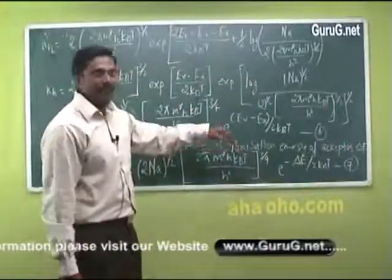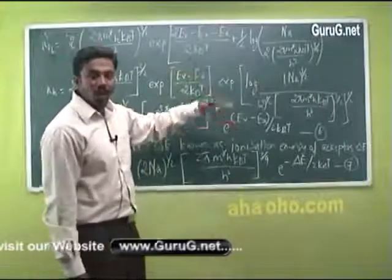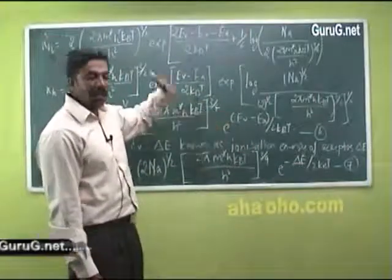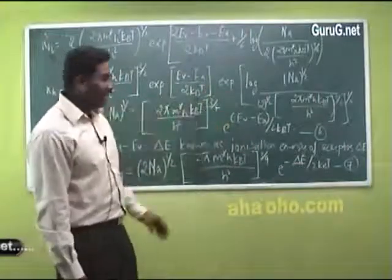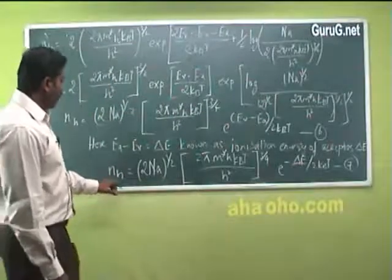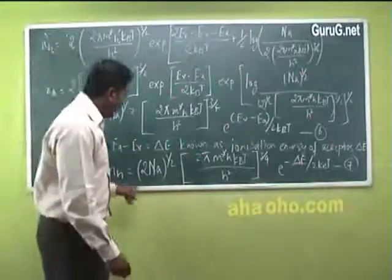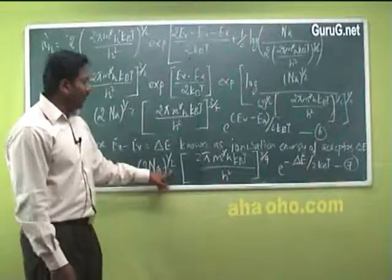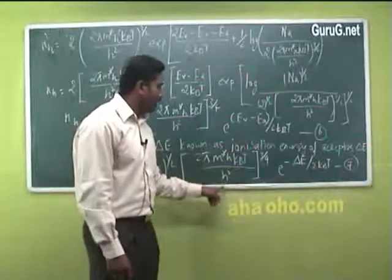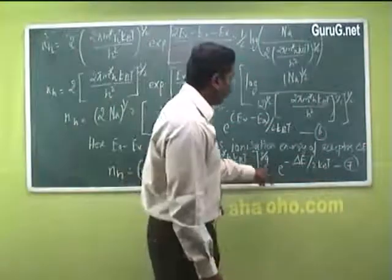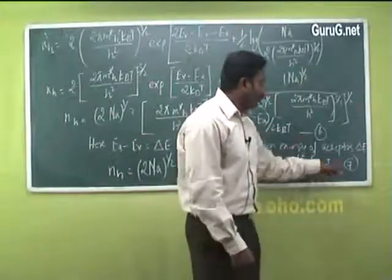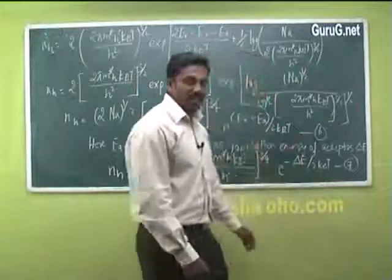Therefore, the density of holes is given as NH equal to 2 into NA^(1/2) into (2 pi M* H KBT / H²)^(3/4) e^(minus ΔE / 2KBT). This is equation number 7.